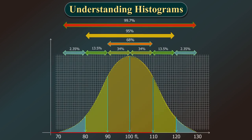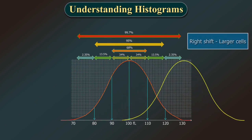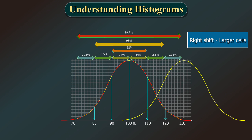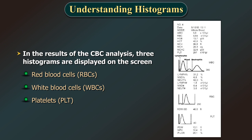To recap the x-axis: every histogram has its baseline on the x-axis, which denotes the cell size. The bell curve begins and ends at the baseline; any curve that doesn't touch the base indicates a possible error. Any shift of the bell curve to the left indicates smaller cells, and any shift to the right indicates larger cells. Widening of the bell curve indicates more dispersion — cells with more size variation than normal, what we call anisocytosis. In CBC analysis results, three histograms are displayed: one each for RBCs, WBCs (with bell curves for lymphocytes, mixed cells, and neutrophils), and platelets.